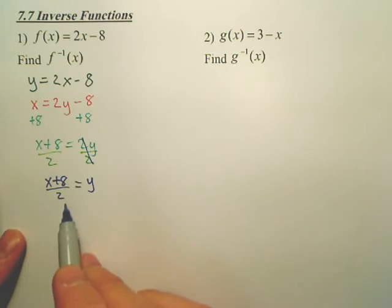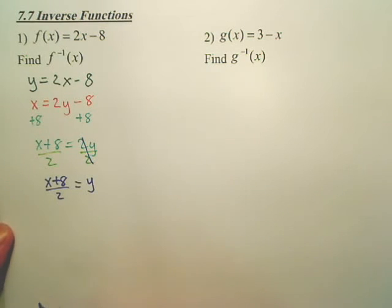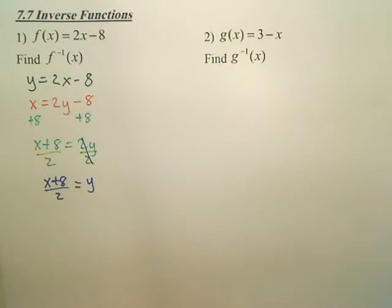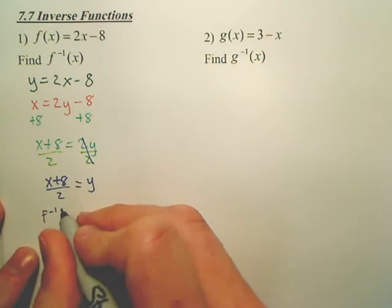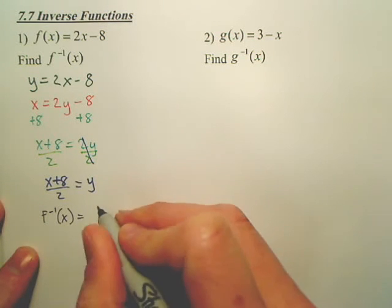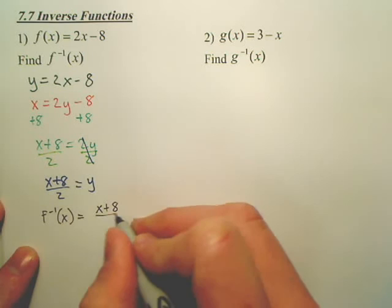Now, could you divide both pieces by 2? Yes, or you can leave it like this. I'm okay leaving these like this. So, here's how you technically would write it. The inverse function of x equals x plus 8 over 2.